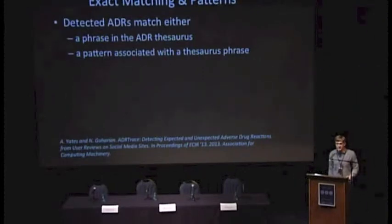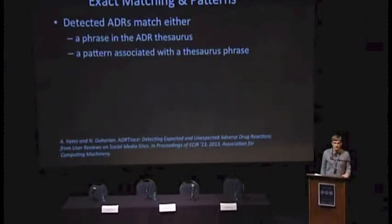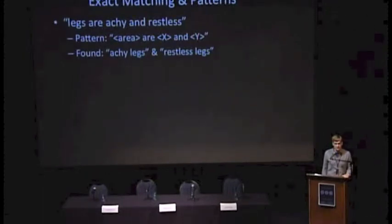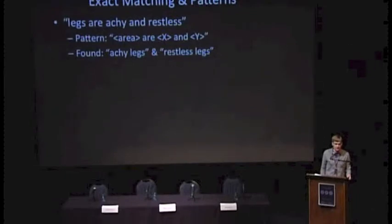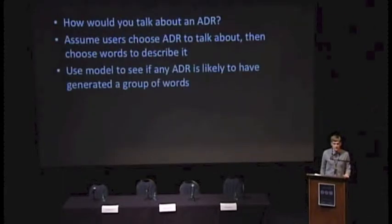The first Georgetown method is very simple — exact matching in patterns. Basically, we detect an ADR if we find it in our ADR thesaurus or if it matches a pattern associated with a phrase in our thesaurus. What I mean by a pattern is something like 'X and Y are Z.' If you have legs that are achy and restless, you can combine that with the pattern to find something like achy legs and restless legs. These patterns can be mined using a standard pattern mining technique from a medical corpus, and then a human reviews and discards patterns that aren't useful.